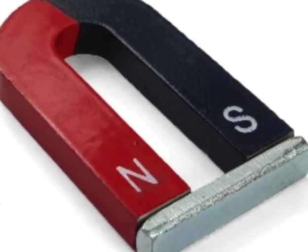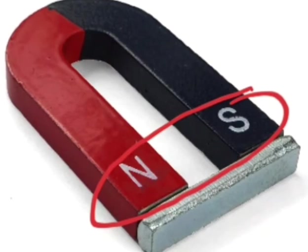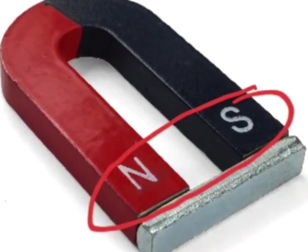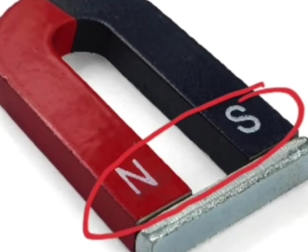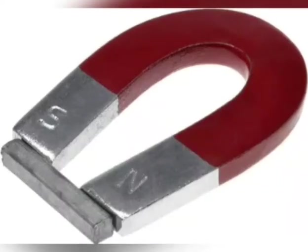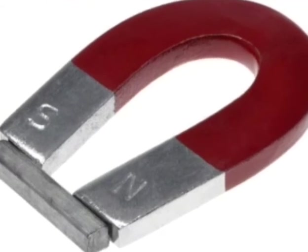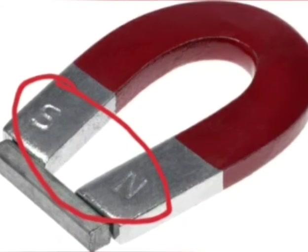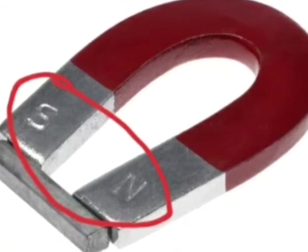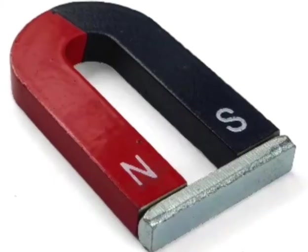Horseshoe magnet ya phir U-magnet ka dono pole same side mein rehta hai. Isliye isko store karne ke liye sirf ek soft iron piece zarurat hota hai. One horseshoe magnet or U-shaped magnet requires only one soft iron bar for its proper storage. Thus, this type of magnets are stored singly and not in pairs.